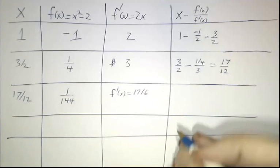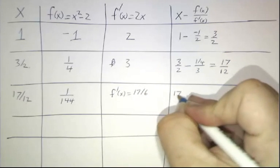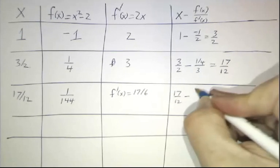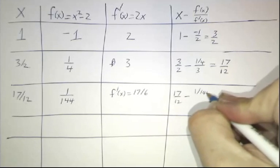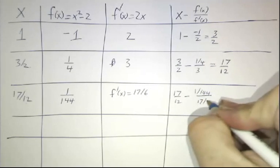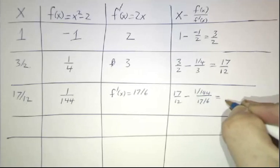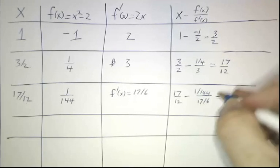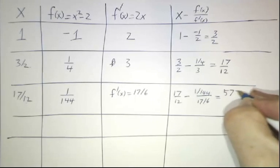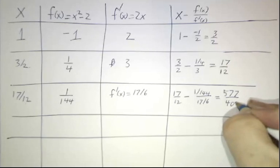And now we wind up getting 17 twelfths minus 1 over 144th divided by 17 sixths. And the arithmetic gets a little bit ugly, but you can do it. The answer turns out to be 577 over 408.